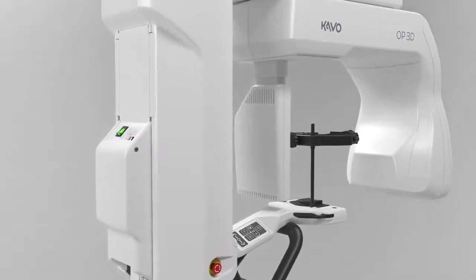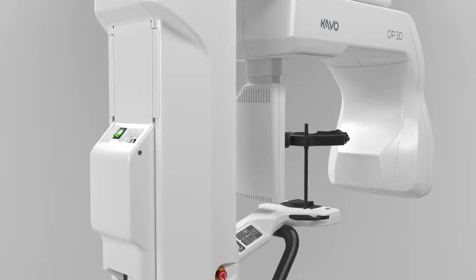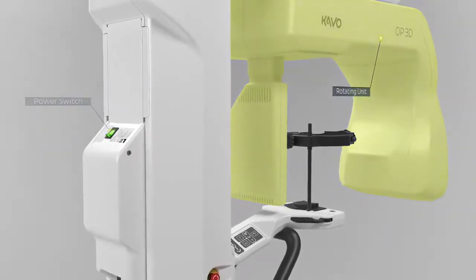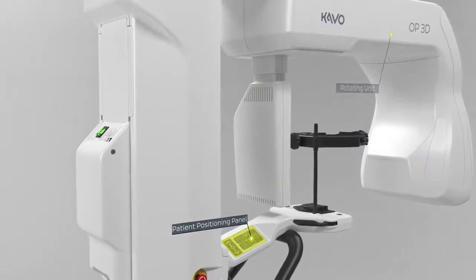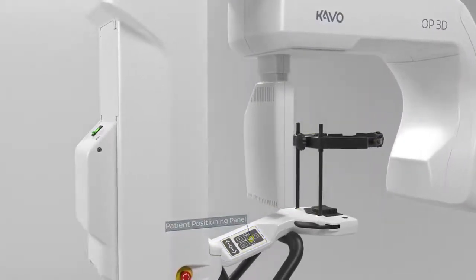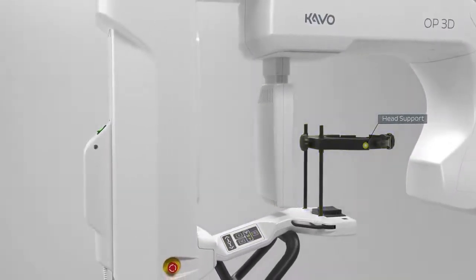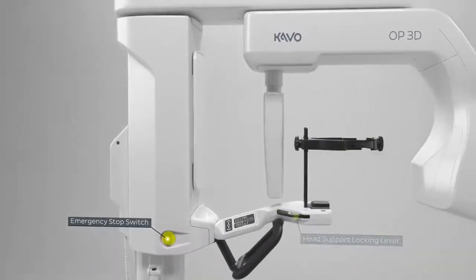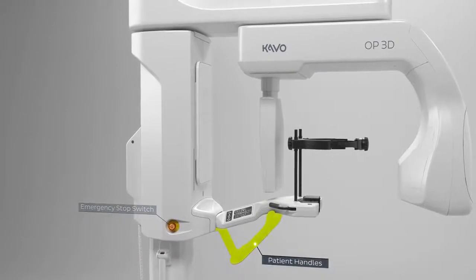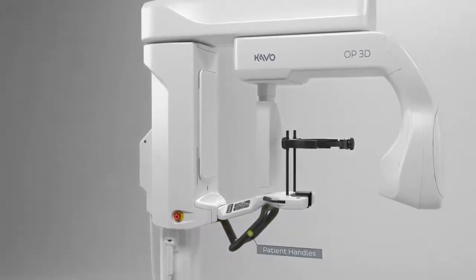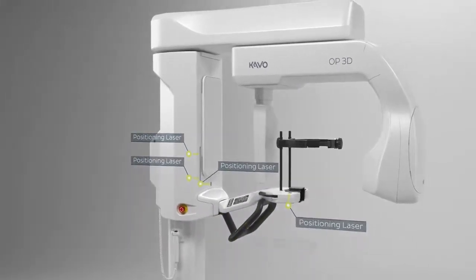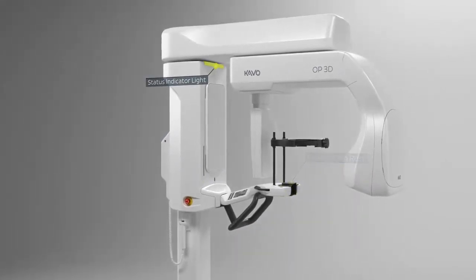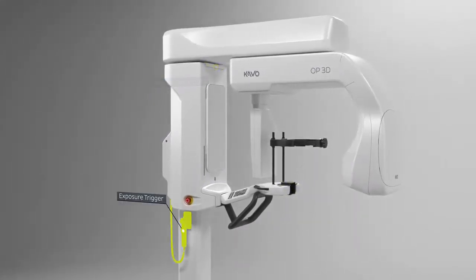Areas to familiarize yourself with on the OP3D are the power switch, the rotating unit, the patient positioning panel, the head support, head support locking lever, emergency stop switch, patient handles, positioning lasers, patient chin rest, status indicator light, and the exposure trigger.